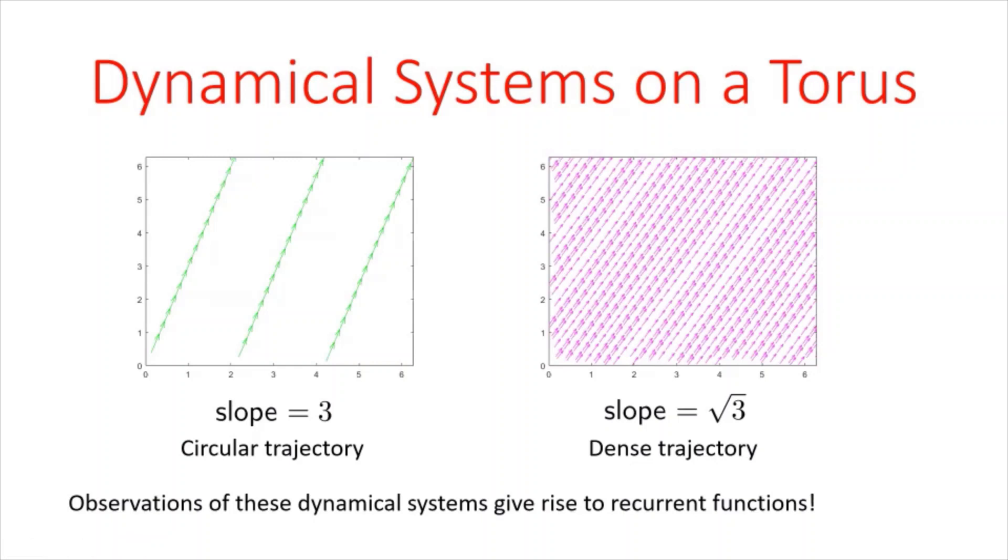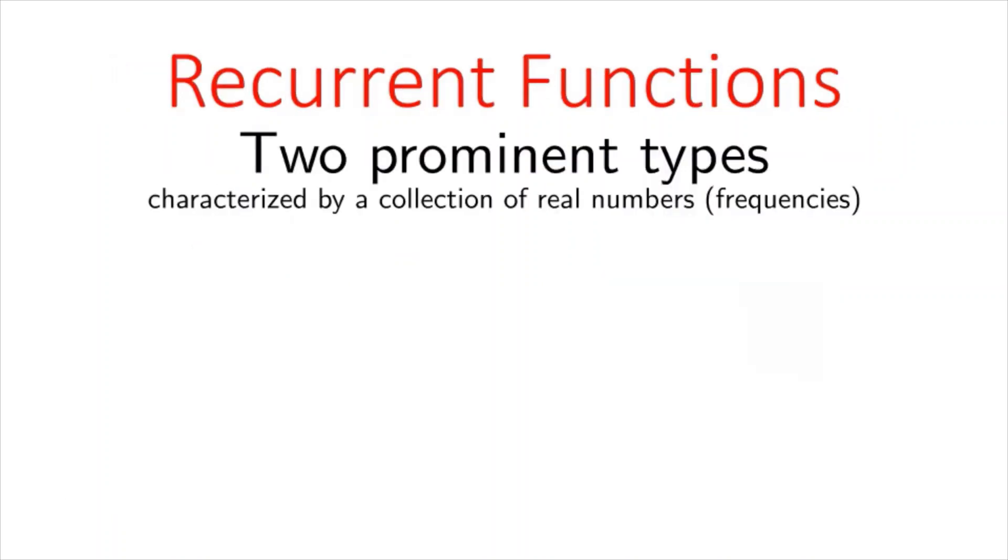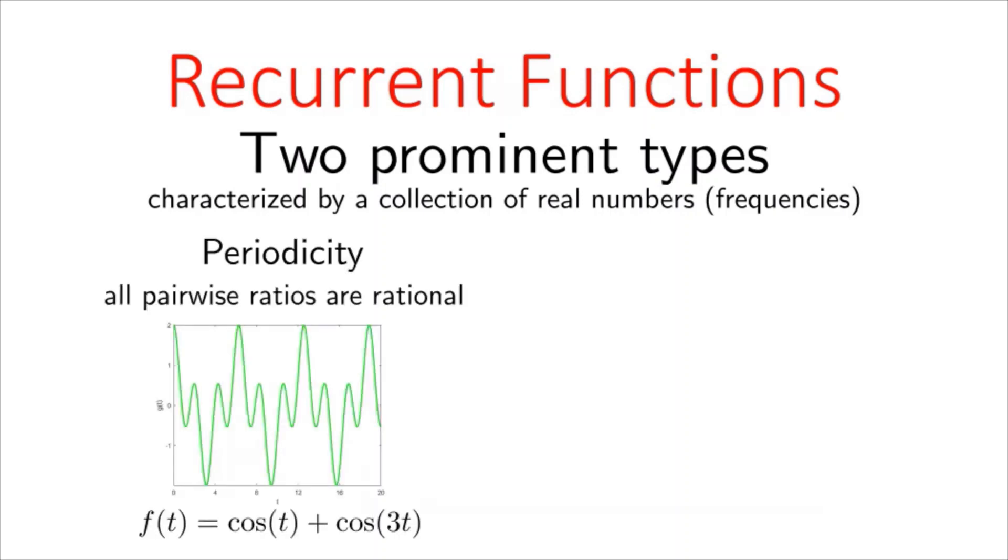So there's essentially two types of recurrences, and they're both characterized by a collection of real numbers, which we call frequencies. And if it happens that all pairwise ratios are rational, then we get a periodic behavior or a periodic function, for example, cosine of t plus cosine of three t.